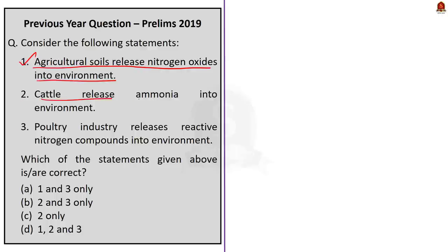Second statement, cattle release ammonia into environment. This statement is also correct. We saw it. Now, the third statement, poultry industry releases reactive nitrogen compounds into environment. This statement is also correct. So, basically, here, the nitrogen oxides and ammonia mentioned in statement 1 and 2, both are reactive nitrogen only. Therefore, we can say that reactive nitrogen is also released by poultry. As we saw, particularly ammonia is generated by the uric acid of poultry manure. So, that means the moment you know that nitrogen oxides and ammonia both are reactive nitrogen, you can easily answer this question. And all these three statements are correct.